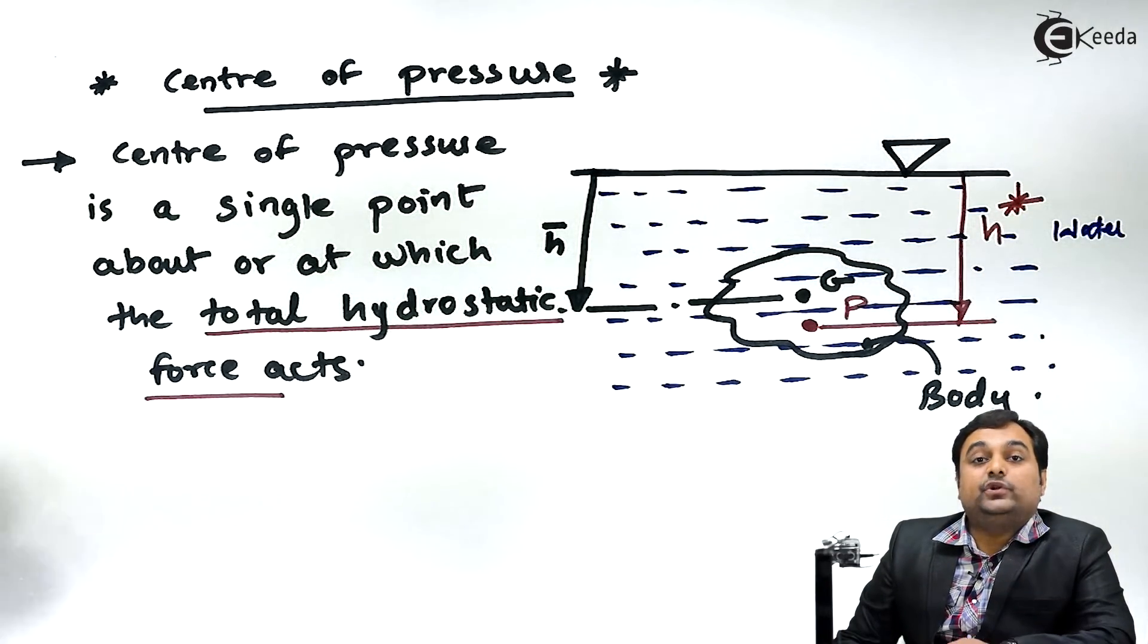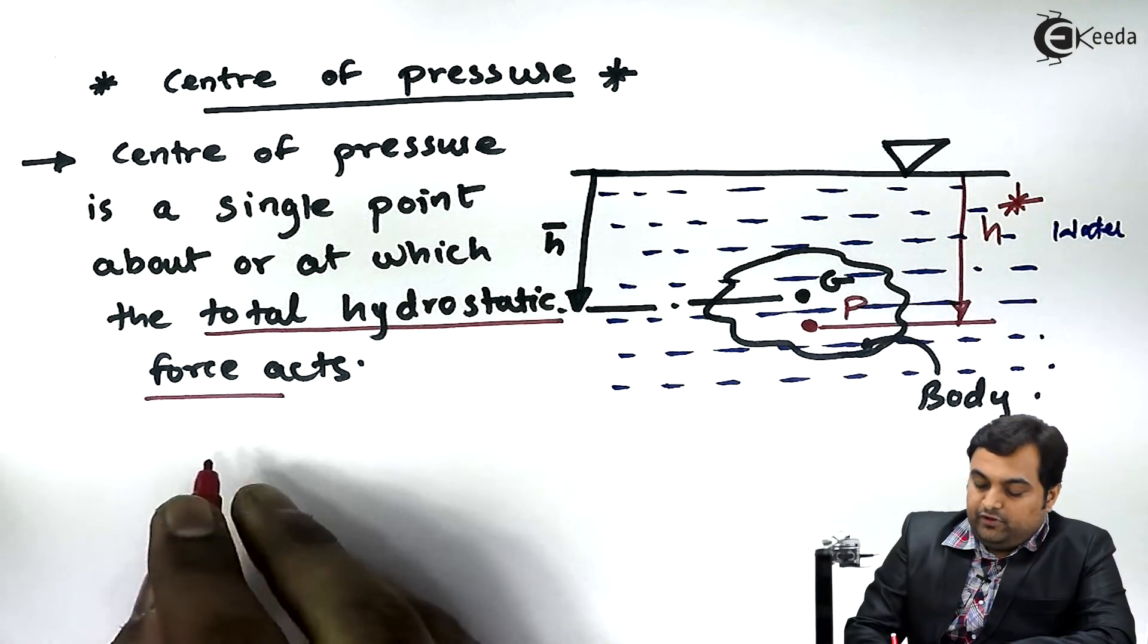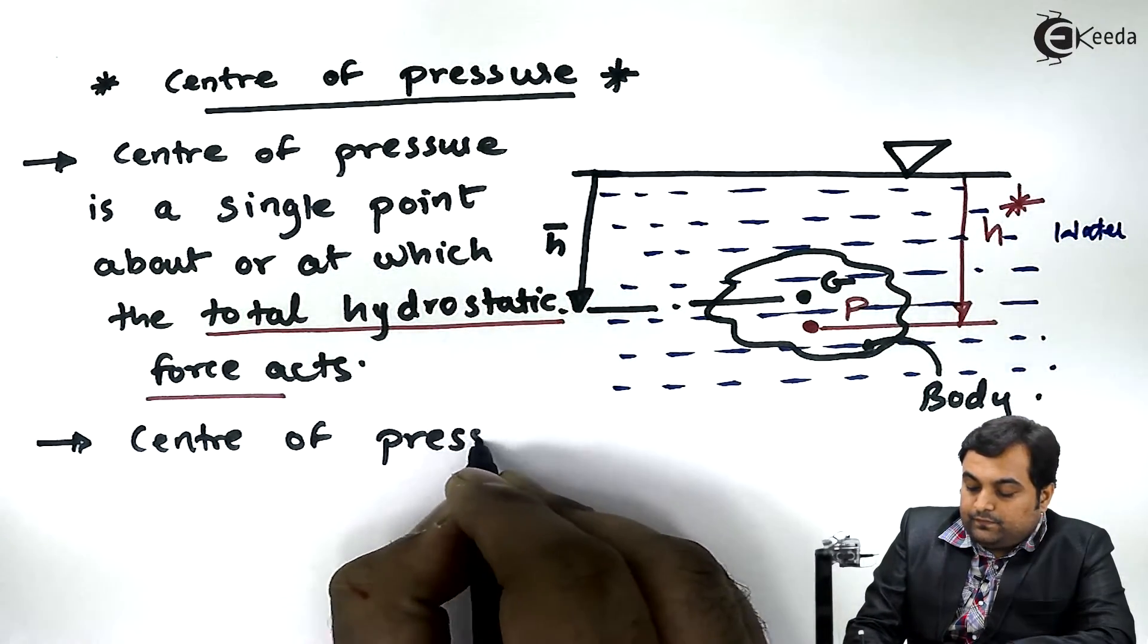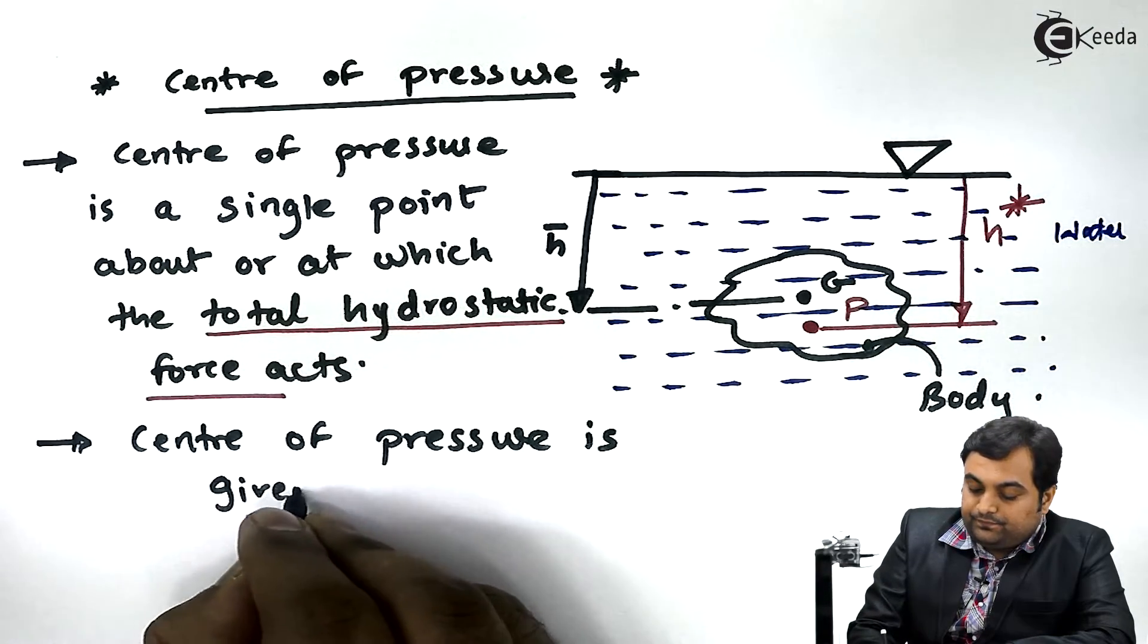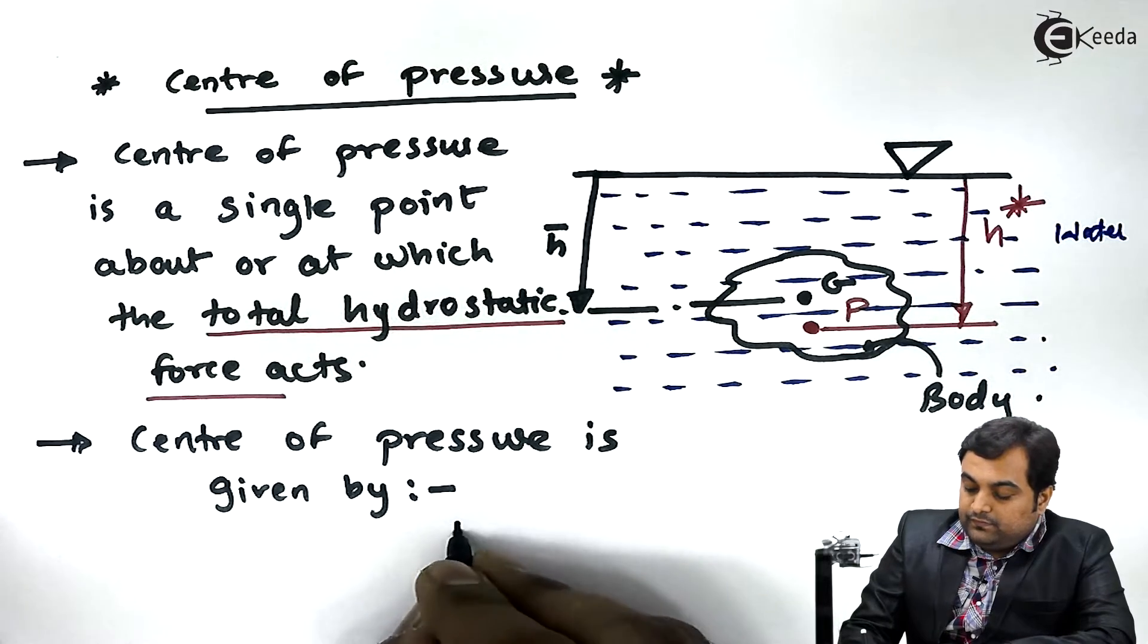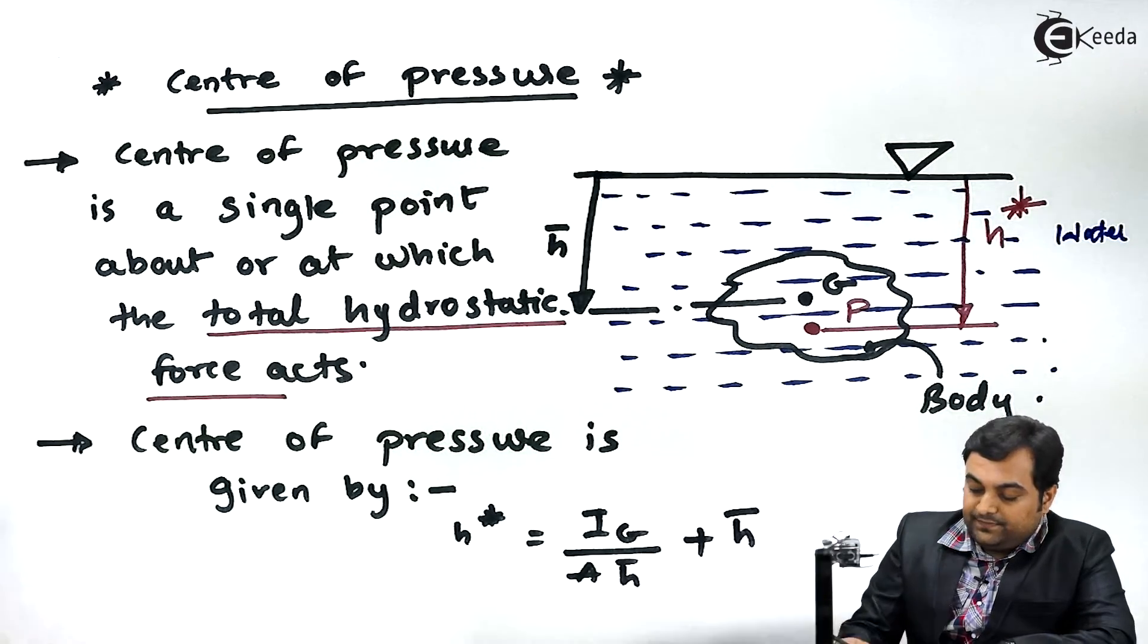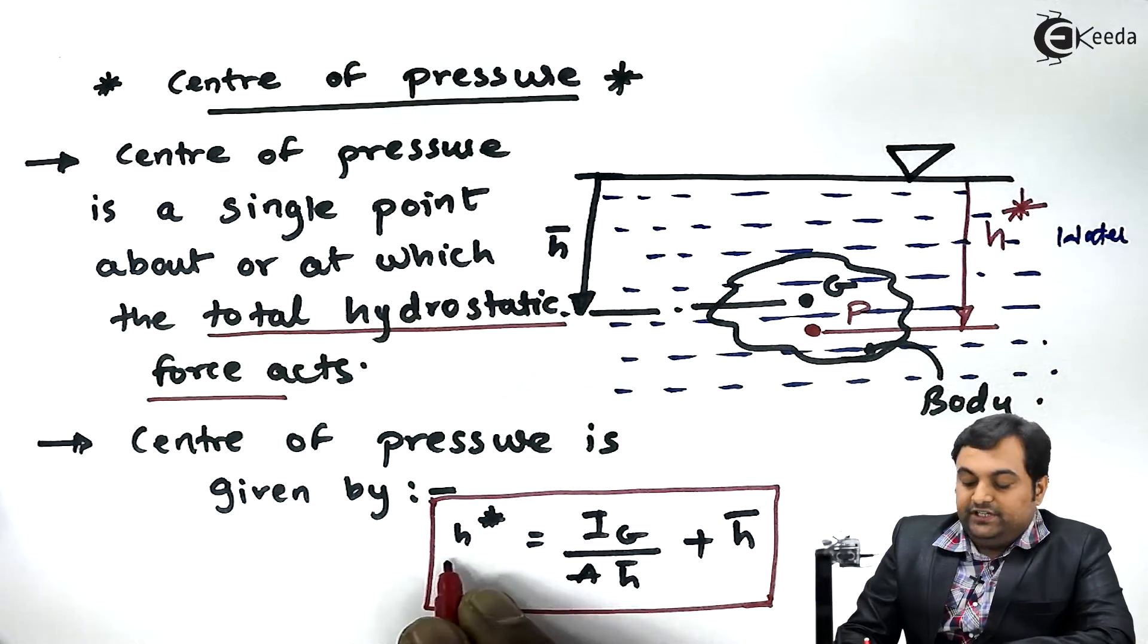If we have to calculate the center of pressure, its value we can find it out by using a formula. I'll write down that center of pressure is given by: H star is equal to IG divided by A times H bar, plus H bar.